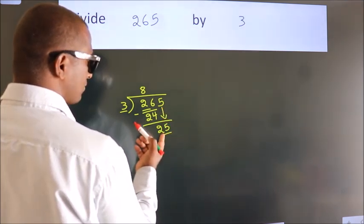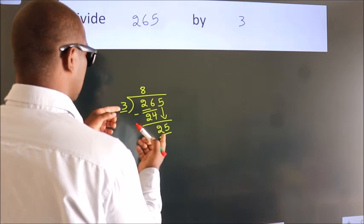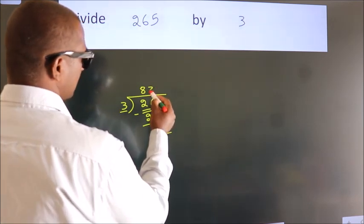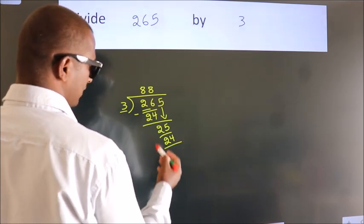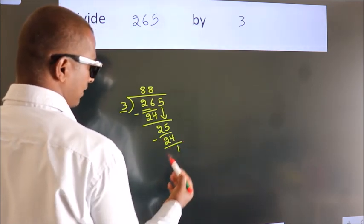A number close to 25 in the 3 table is 3 times 8, which is 24. Now we subtract. We get 1.